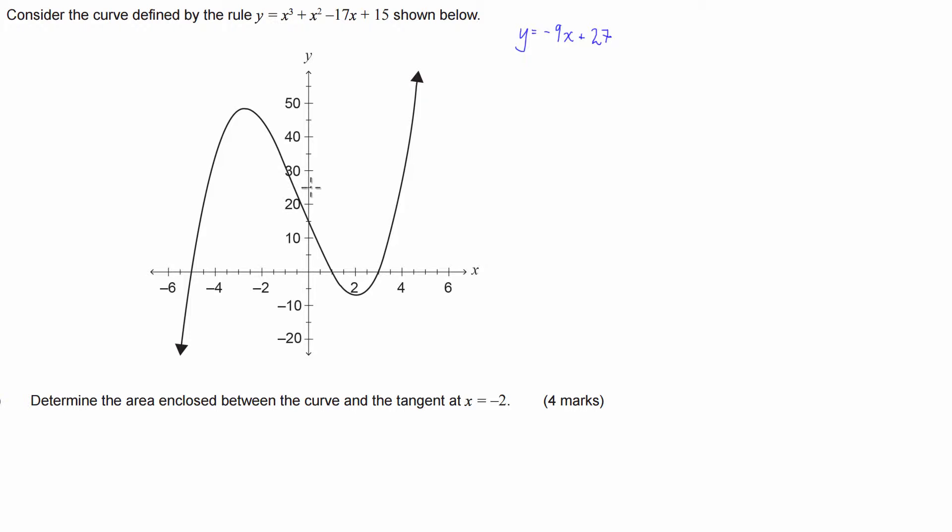This tangent line intersects the curve or touches the curve at x equals negative 2. The next thing we're going to have to do to figure out what the area is in between the curve and the line is figure out where else it intersects the curve. To work that out, what we have to do is make both equations equal to each other and solve for x.